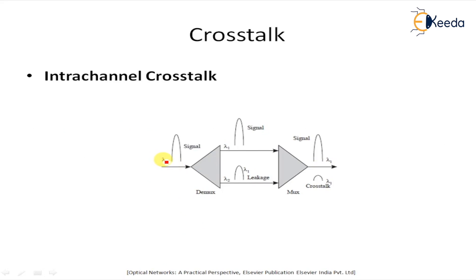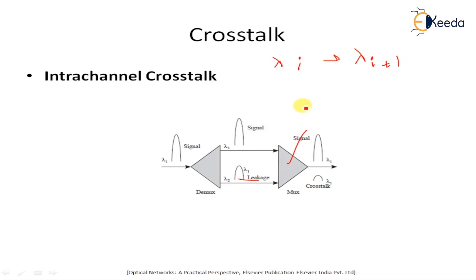Consider an example: a portion of the signal at wavelength lambda_i leaks into the adjacent channel lambda_{i+1} due to non-ideal suppression in the demux. When the wavelengths are combined again into a single fiber by the mux, the small portion of lambda_i that leaked into the lambda_{i+1} channel will also leak back into the common fiber at the output side.